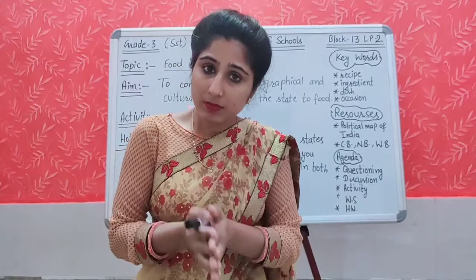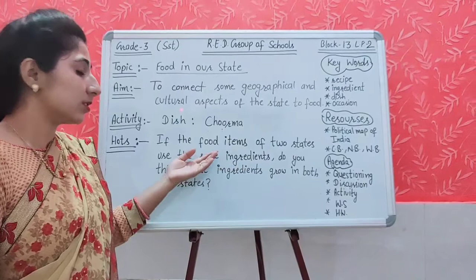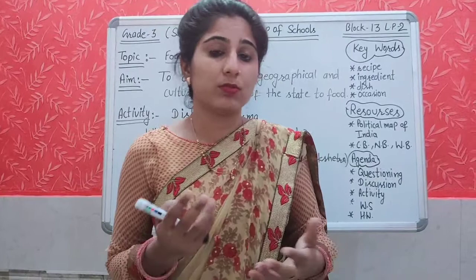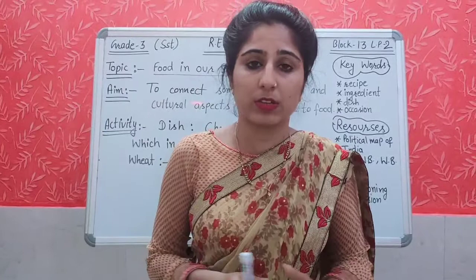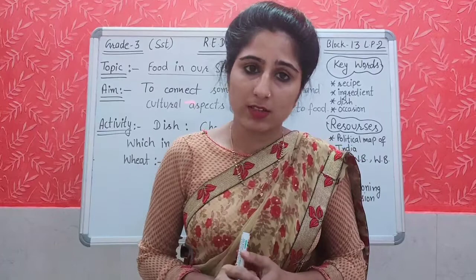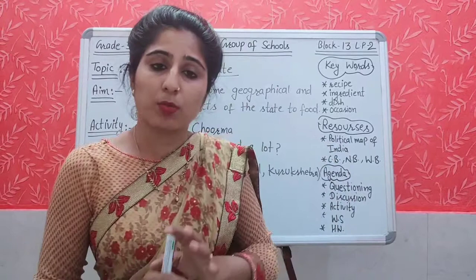Wheat is grown in Haryana as well as in Punjab. So the ingredient — wheat — is grown in both states and used in their food items. Not only from wheat can we make Churma; we can also use Bajra, the millet. This millet crop is also grown in Haryana, Punjab, and other states of India on a large scale.